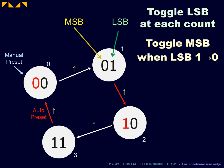Step 2, we toggle the most significant bit when the least significant bit transits from 1 to 0. Note that this would also take into account the auto preset.